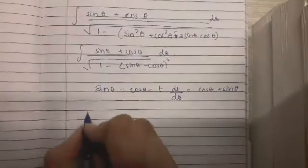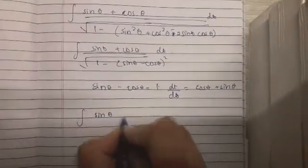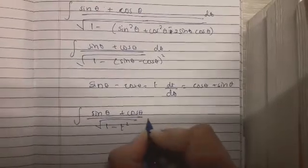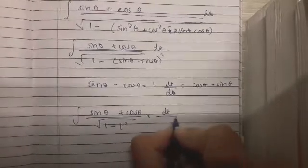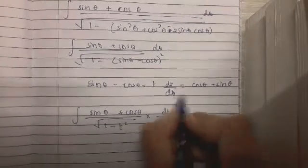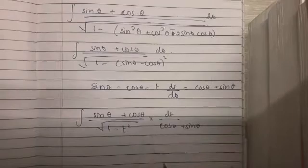Substitute this in the integral, we have sin theta plus cos theta as the numerator, root 1 minus t square into dt upon cos theta plus sin theta because d theta becomes dt by cos theta plus sin theta.